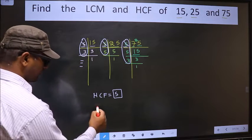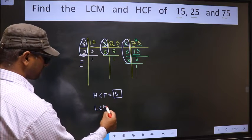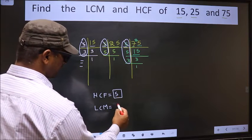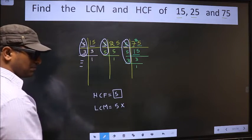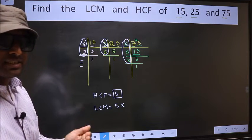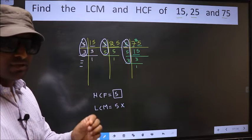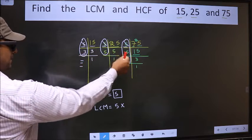Now to get LCM, whatever HCF we got, to that we should multiply by the numbers which appeared either once or twice in these 3 places.